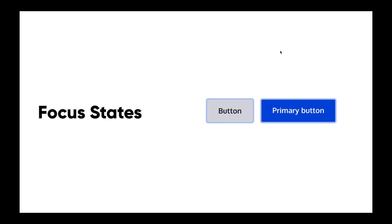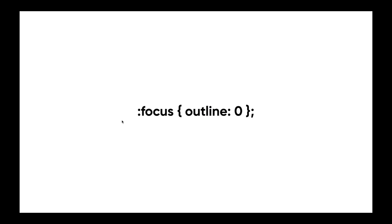Let's talk about focus states. Focus is one of the most important features that enables users to use a computer with just a keyboard. Most style sheets will have this one piece of code that will cause major accessibility failure — and this is it: removing the outline.